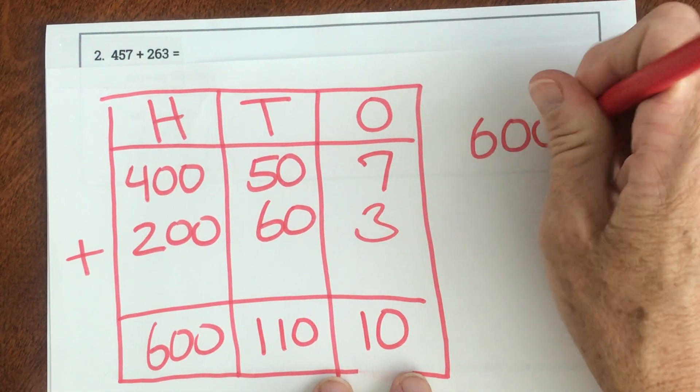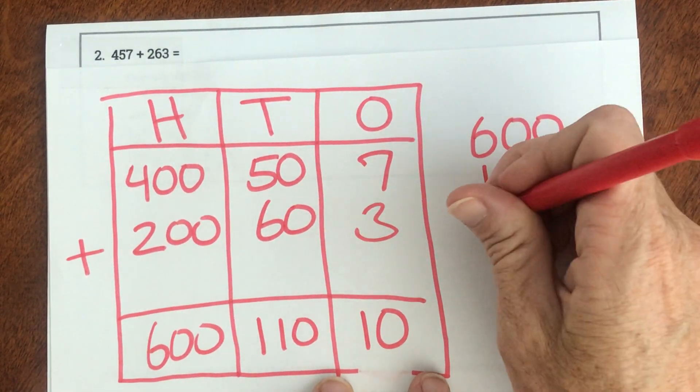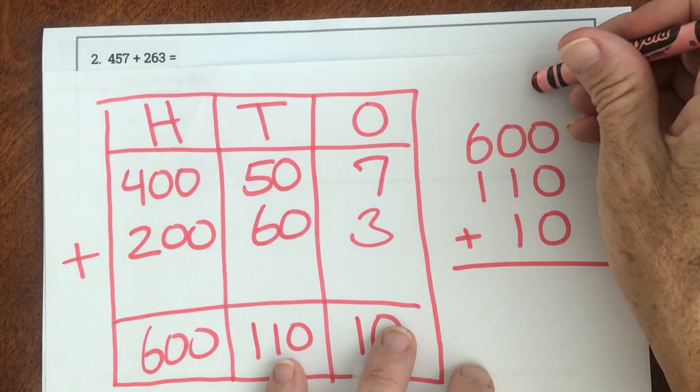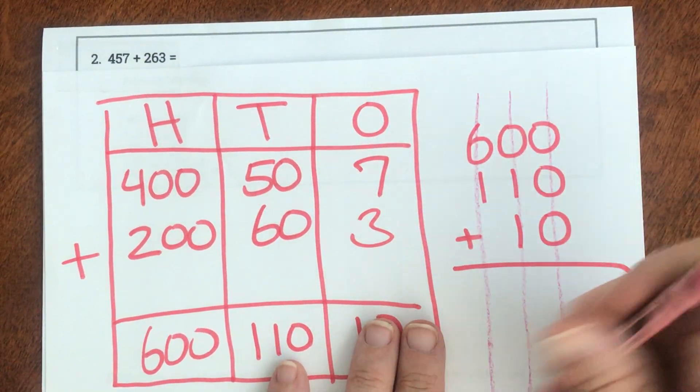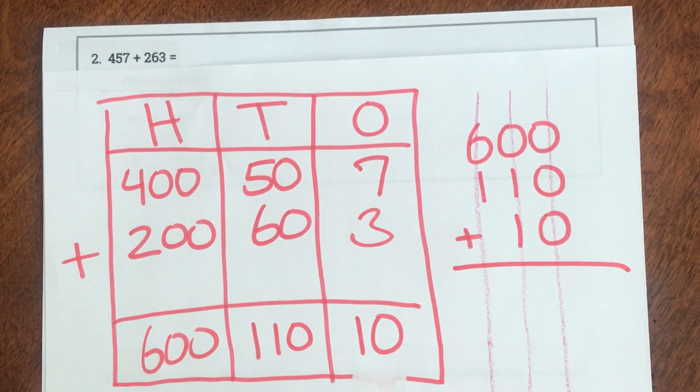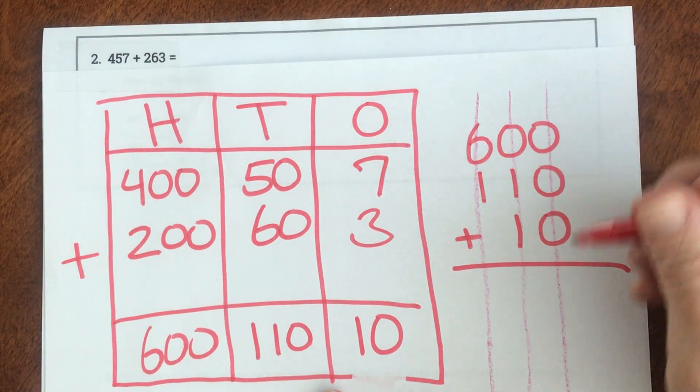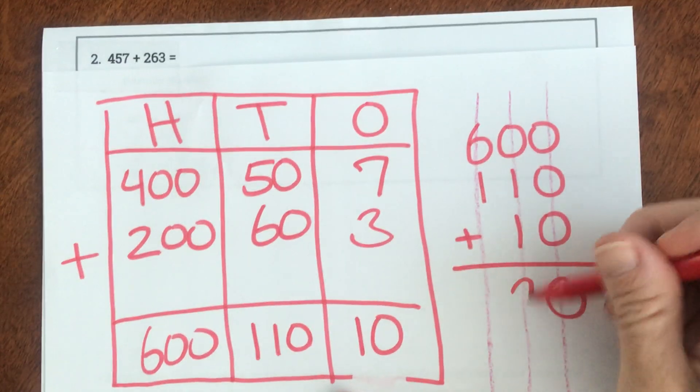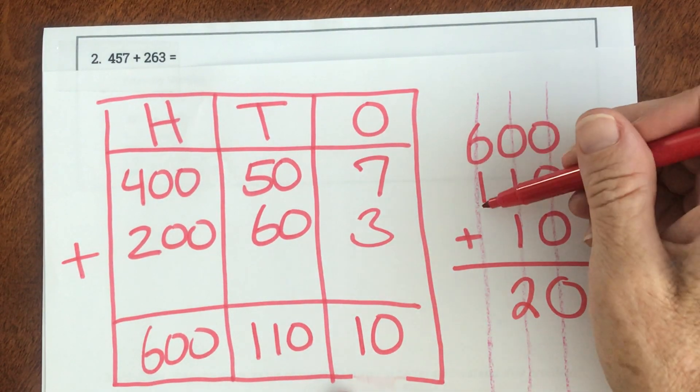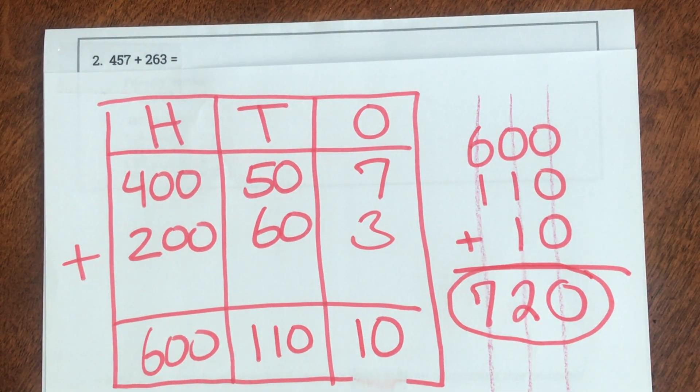So I have 600, 110, and 10. Now remember, in working form, you want to make sure your numbers are lined up really nice. That's going to be the difference between someone who gets correct answers and someone who makes silly mistakes. So zero plus zero plus zero is zero. Zero plus one plus one is two. And six plus one is seven. So our answer is 720.